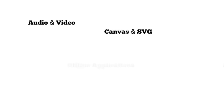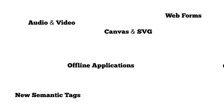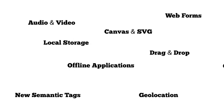These features include the video and audio tags, canvas and SVG for drawing on the webpage, offline applications that allow us to run our applications without an internet connection, new form elements that give us new ways to input information into our web forms, new semantic markup tags that give us the ability to more accurately describe our markup, geolocation that allows us to get information about the user's location right from the browser, local storage APIs that allow us to use the browser for persistent storage, and drag and drop APIs that natively integrate drag and drop capabilities into the browser.